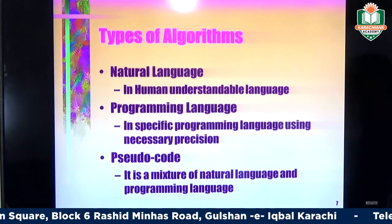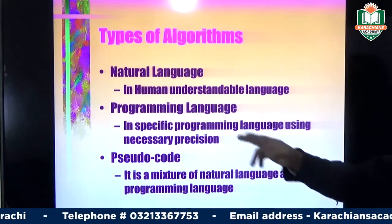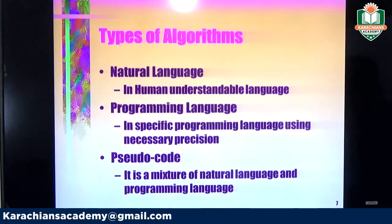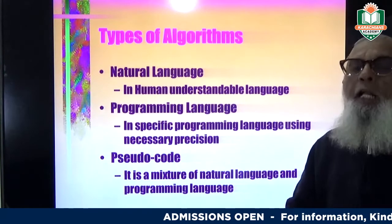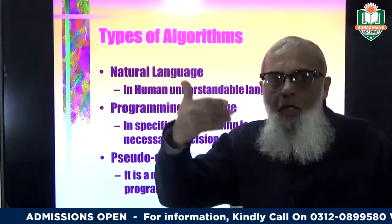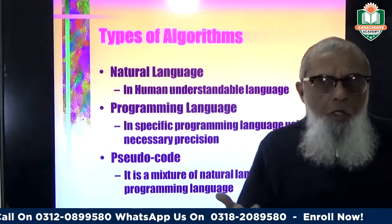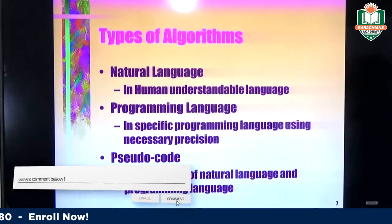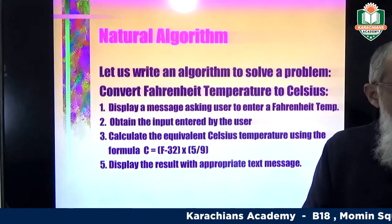The types of algorithm: number one, natural language — written in human-understandable language. Number two, programming languages — using specific programming languages with necessary precision. Number three, pseudocode — a mixture of natural language and programming language. Natural language means whatever we write in our native language as a sequence of instructions. Programming language includes Python, Visual Basic, C, C++, C-Sharp, or whatever platform you want to use. Pseudocode is a mixture of both programming and human-oriented languages.